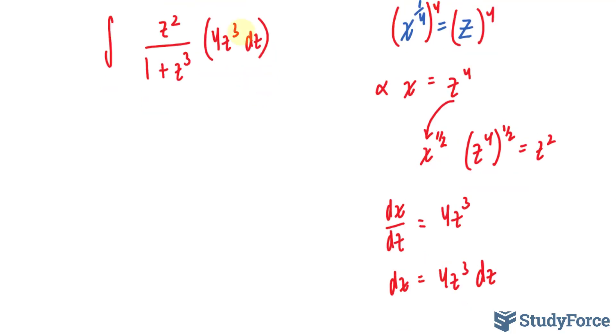My next step is to multiply this with that. And by doing that, I can take out this 4 outside of the integral, where I have 4 times the integral of z to the power of 5 over 1 plus z to the power of 3 dz.